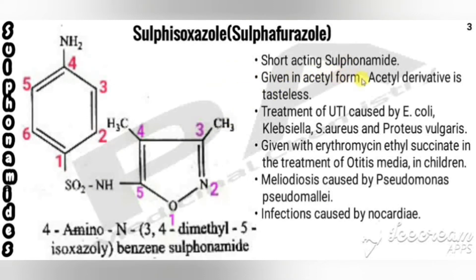The chemical name is 4-amino-N-(3,4-dimethylisoxazol-5-yl)benzenesulfonamide. It is a short-acting sulfonamide usually given in acetyl form because this derivative is tasteless. It is used in the treatment of urinary tract infections caused by susceptible strains of E. coli, Klebsiella, and Proteus vulgaris; in combination with erythromycin ethyl succinate for otitis media, especially in children; for melioidosis caused by Pseudomonas pseudomallei; and for infections caused by Nocardia.